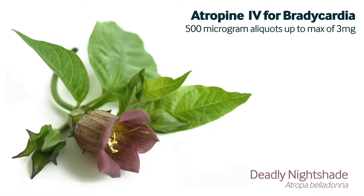The drug we can use to antagonize this is atropine — you may be aware it is found in plants including deadly nightshade. We can give multiple doses in 500 microgram aliquots up to a maximum of three milligrams to treat a serious bradycardia.